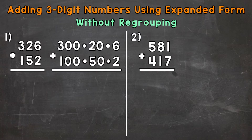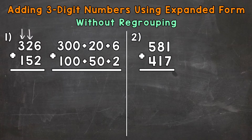So let's jump into number one where we have 326 plus 152. I have both of those numbers in Expanded Form, so we'll go from there. 326 — the three is in the hundreds place and has a value of 300, representing three groups of 100. The two in the tens place represents two groups of 10, which has a value of 20. And the six in the ones place represents six ones, so it has a value of six.